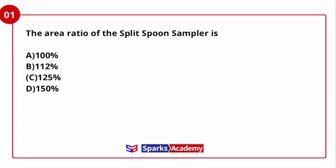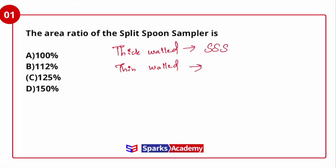Samplers are used in the field — when there is soil in the field and you need to take a sample for engineering properties or index properties. We commonly have two types: thick walled sampler and thin walled sampler. The thick walled sampler is represented by the shell-by (shelby) sampler. The split spoon sampler is also used at intervals — once every 1.5 meters or every five feet.